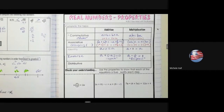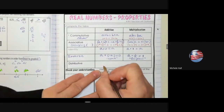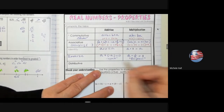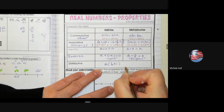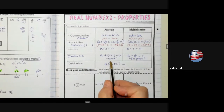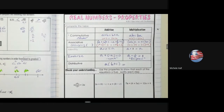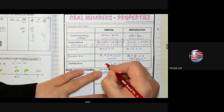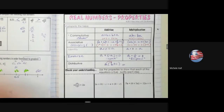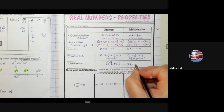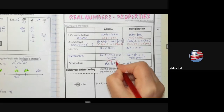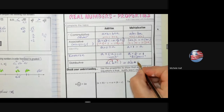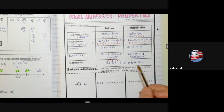The distributive property is one of the most widely used properties throughout math. If I have a times (b plus c), I need to distribute the a onto the b and onto the c by multiplying. So a times b is ab, plus a times c is ac. I can see that the b plus c now has the a distributed onto them.